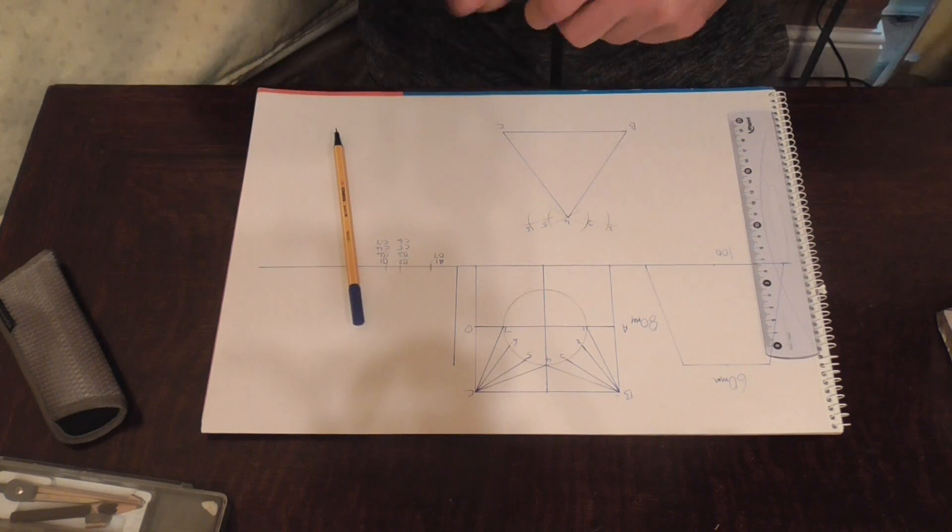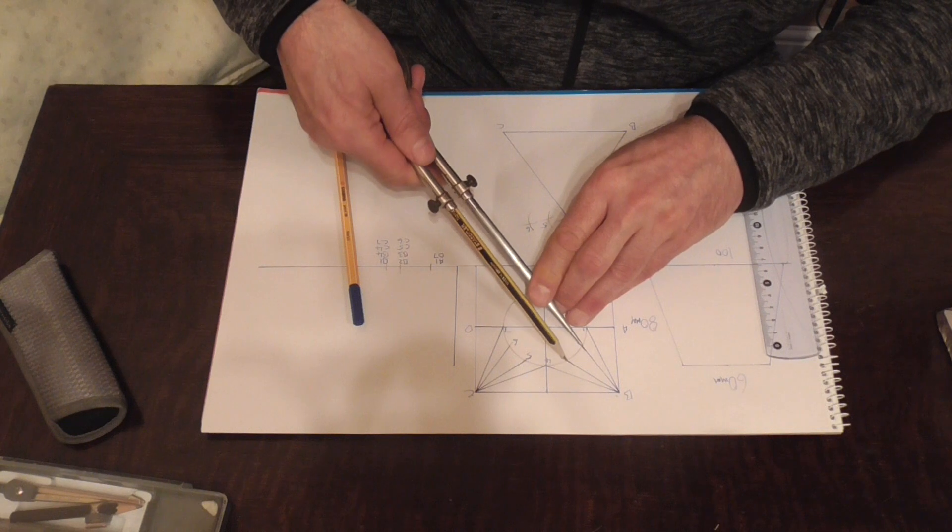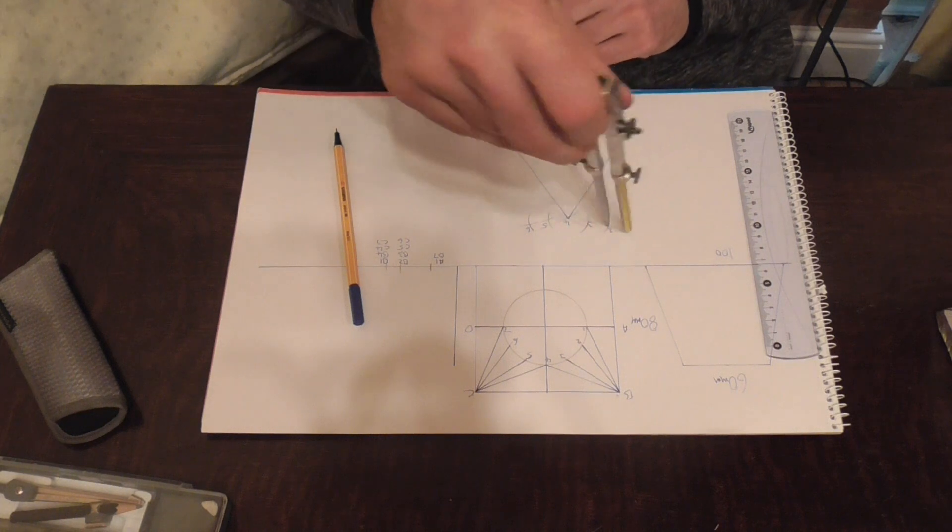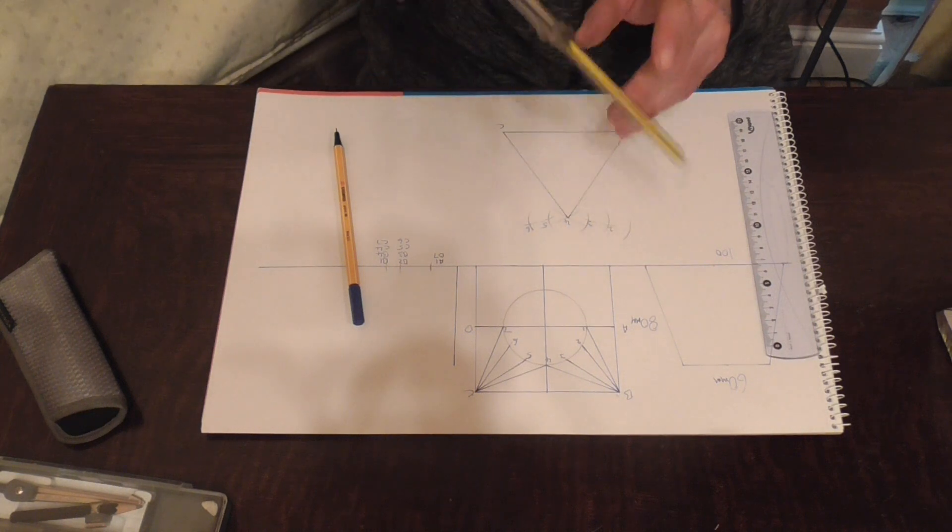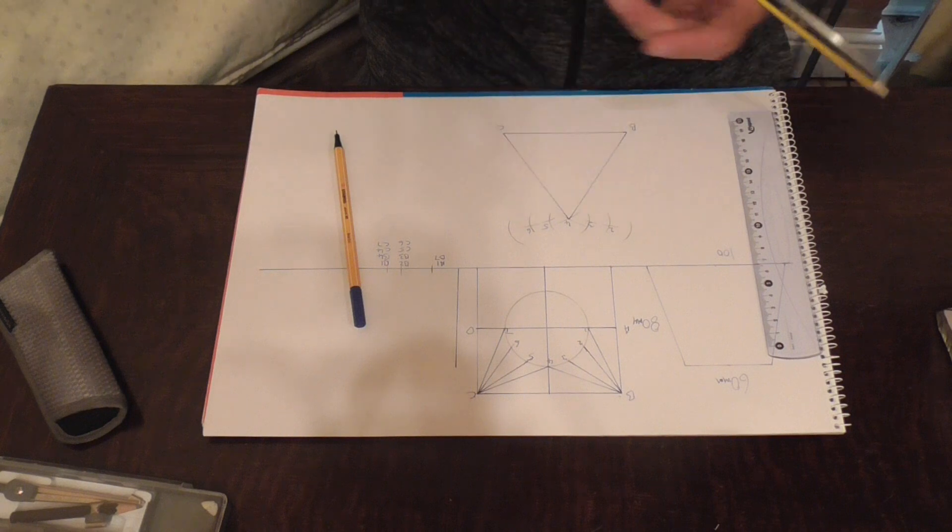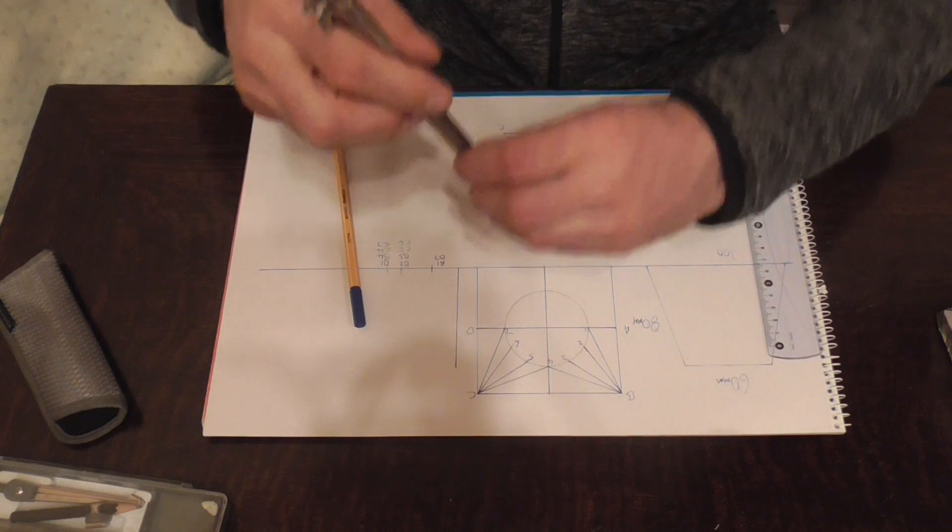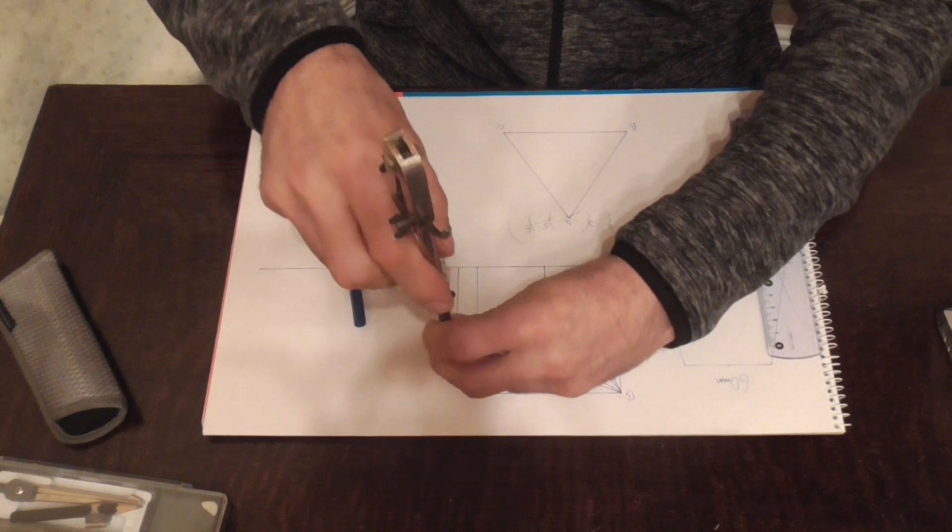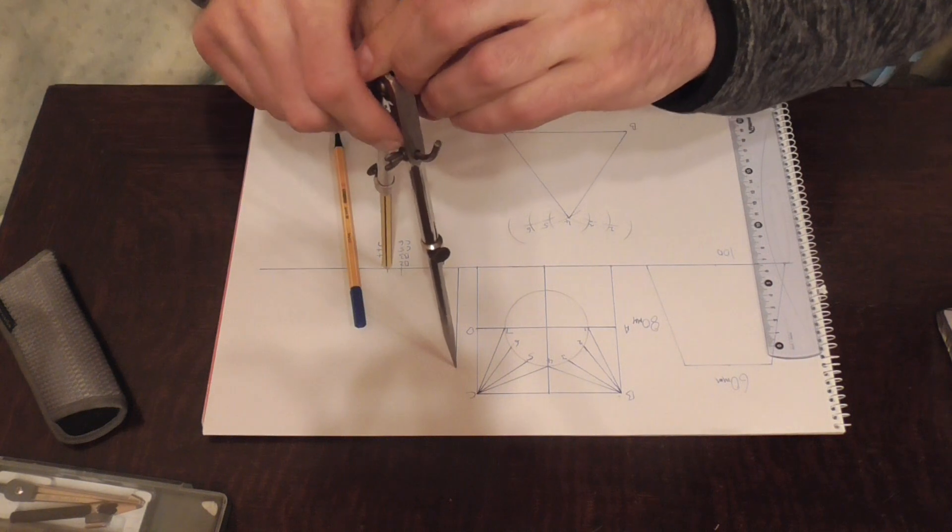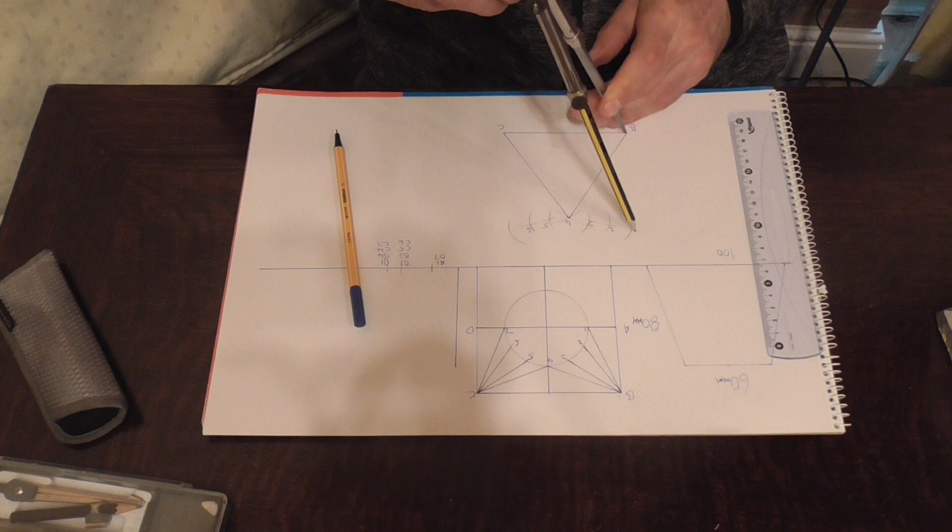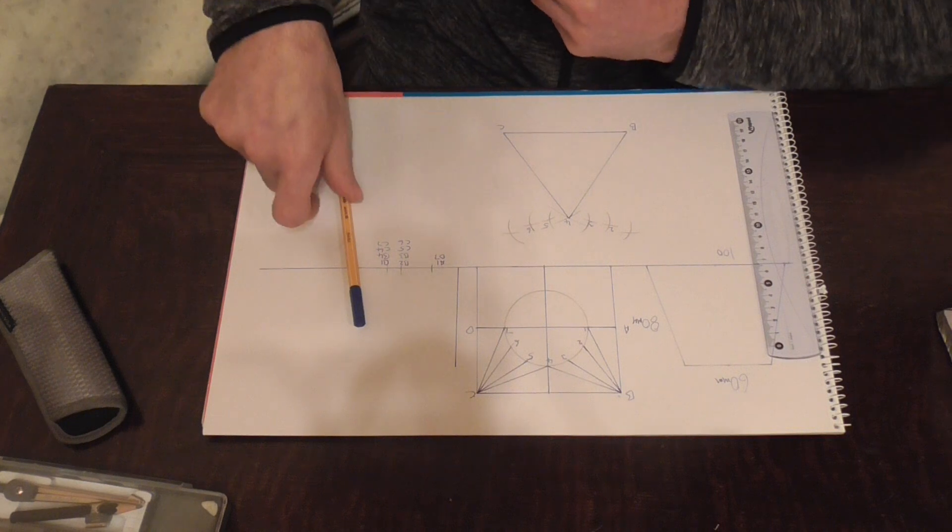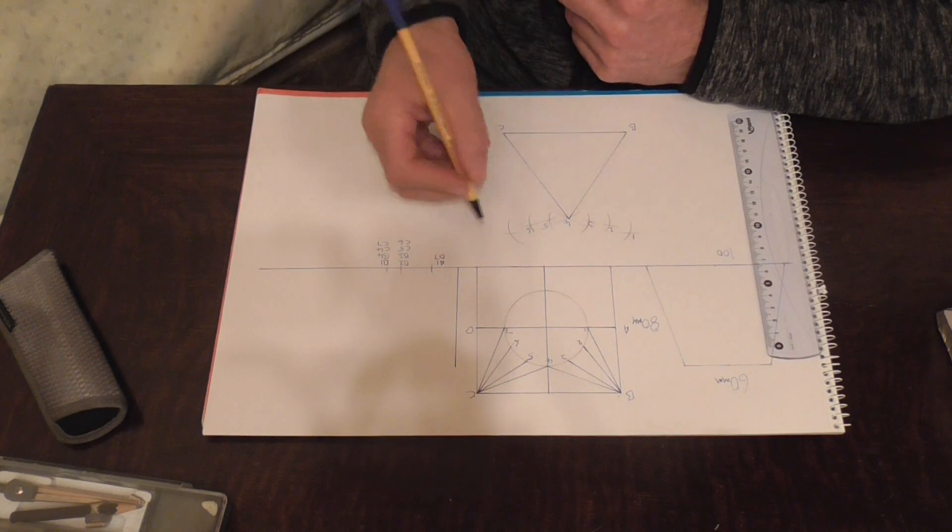Take our dividers and open them up again to this division here. Put an arc in. The same over here, put an arc in. And we open our dividers up to B1. Put an arc in. And we label those positions 1 and 7.